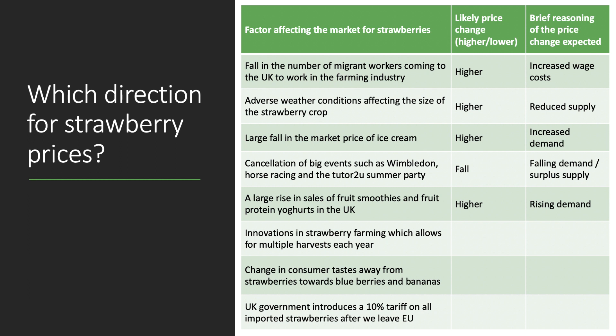Factor six: innovations in strawberry farming that allow for multiple harvests each year — better crop controls, improved use of fertilizers, poly tunnels, etc. In this situation, we thought this would lead to lower prices. If you have multiple harvests or can harvest for longer during the year, that increases supply relative to demand, pushing prices down.